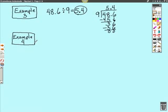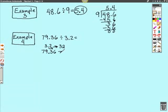Now, here we want to divide 79 and 36 hundredths divided by 3 and 2 tenths. Now, here we've got to move this decimal over. So we're going to take 3.2, we're going to move this decimal over to here, and we're going to write 32. Now, we have to do the same thing in our other number here. We have to move it over the same amount of times, so that now we've got 79 and 36 hundredths will become 793 and 6 tenths.